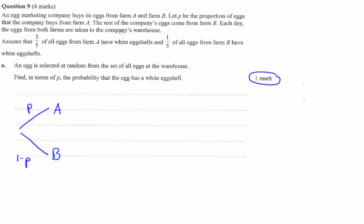Okay, so let's see. Assume that three fifths of all eggs from Farm A have white eggshells. So three fifths have white eggshells, which means two fifths do not. And for Farm B it's one fifth of white eggshells and four fifths do not.